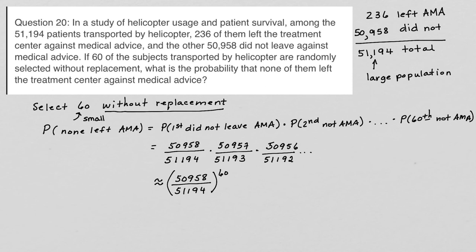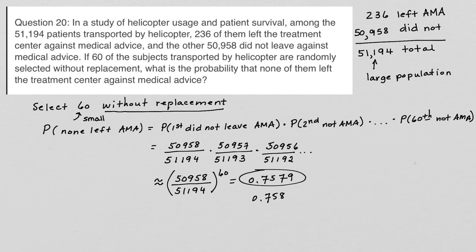So I put this into my calculator. I'm going to round to four decimal places, so that would be .7579. If it's four places, that would be your answer. If it's three places, it would be .758. So that's how you would approach that problem, and that's our final answer.